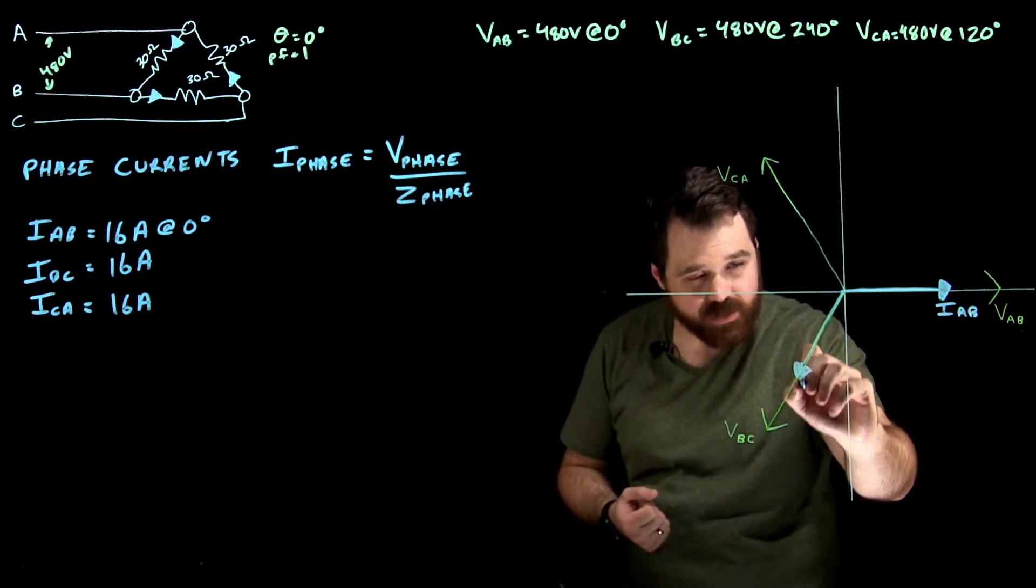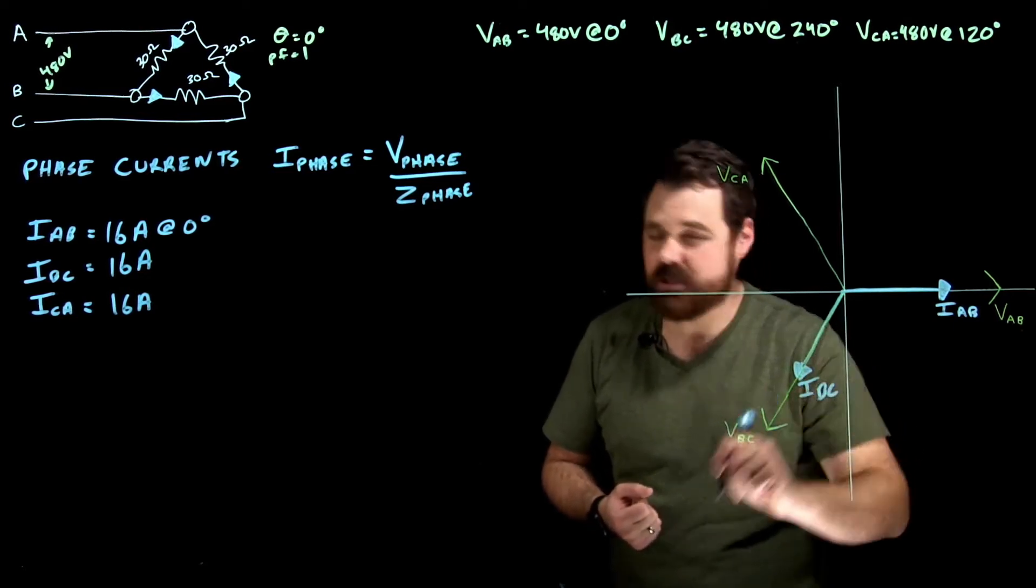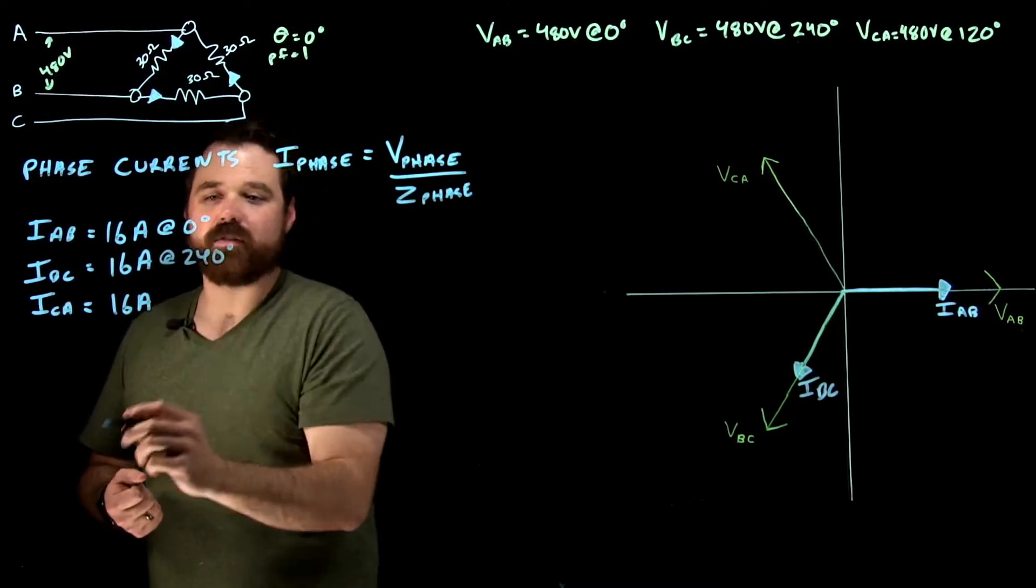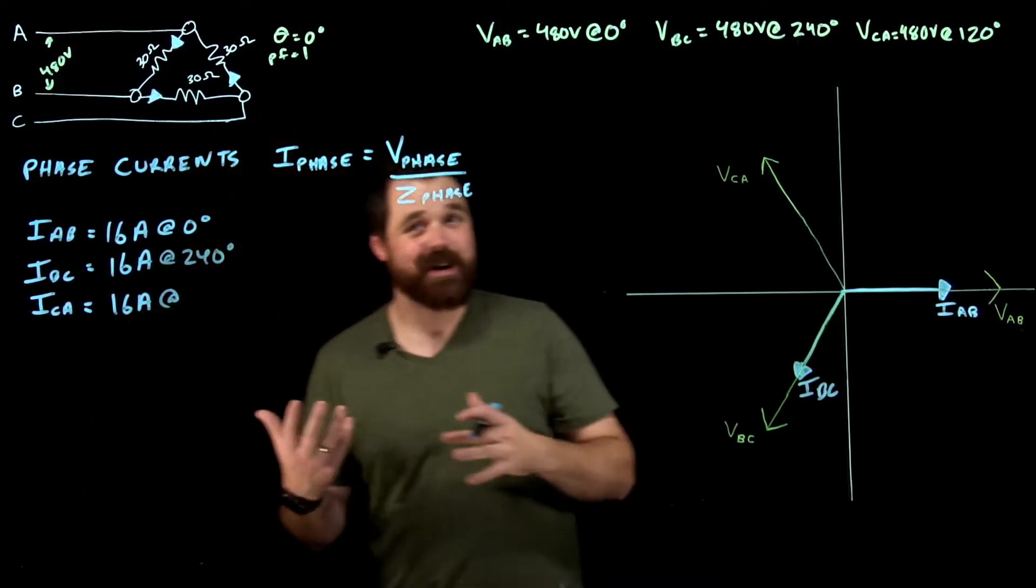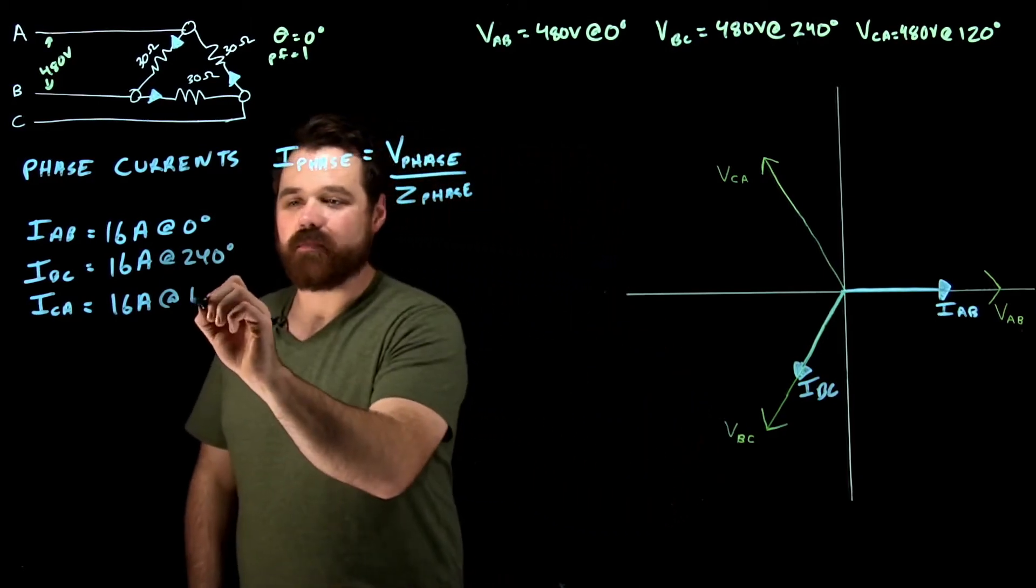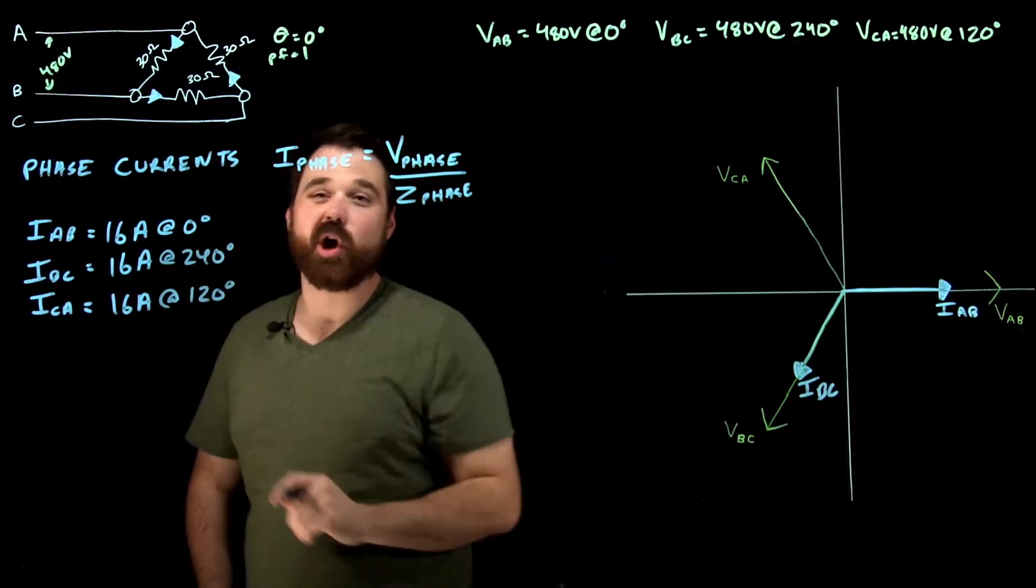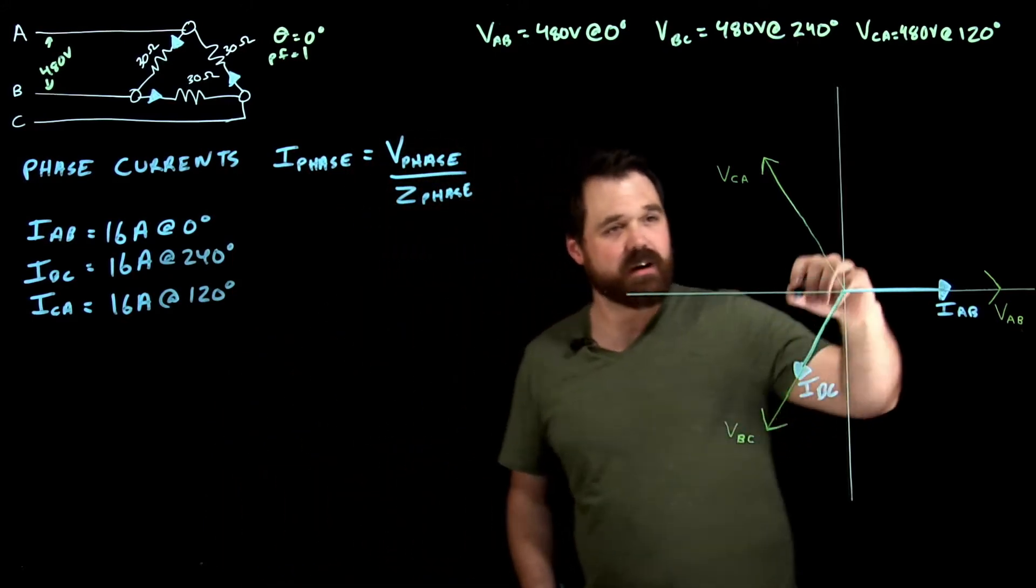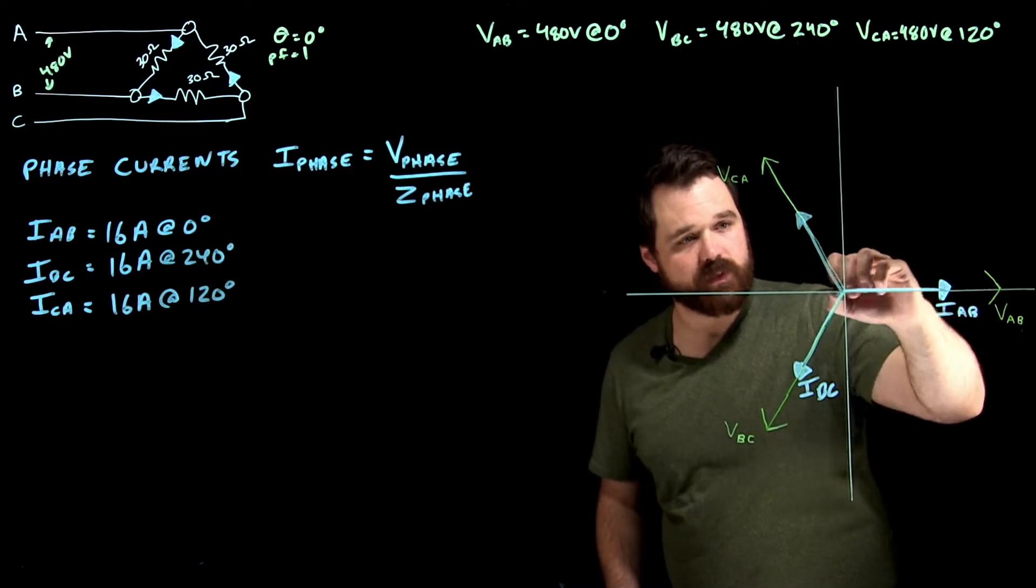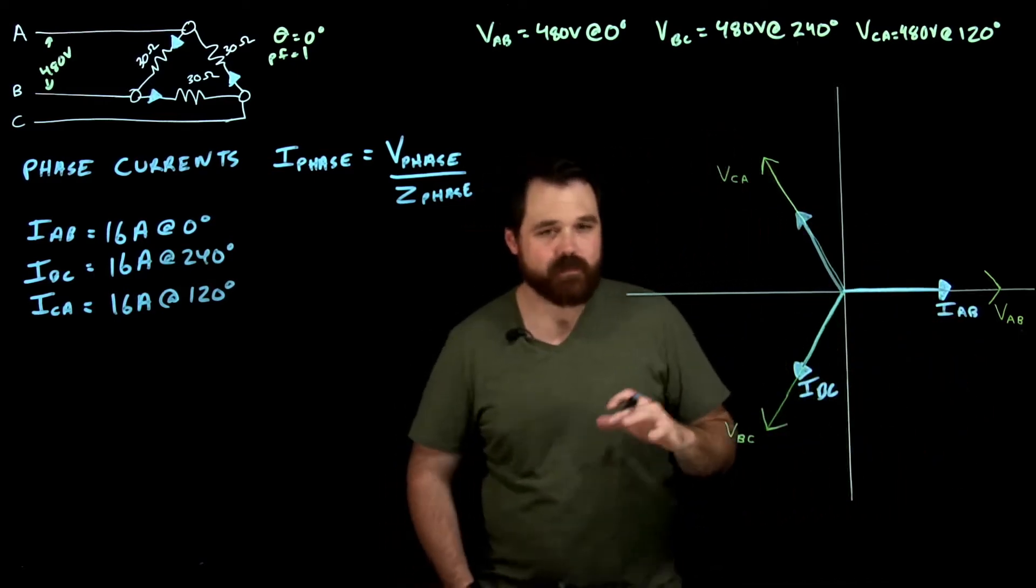At the same time, I B to C, which makes it at 240 degrees. Now for my last one, same thing yet again, I'm in phase, my voltage was at 120, that means my current was at 120, which puts it up here. Just like so. Awesome.